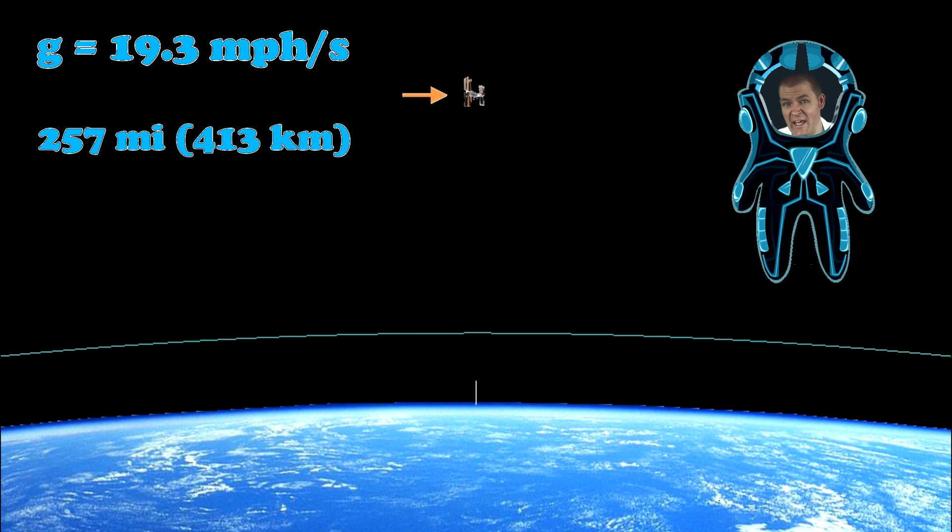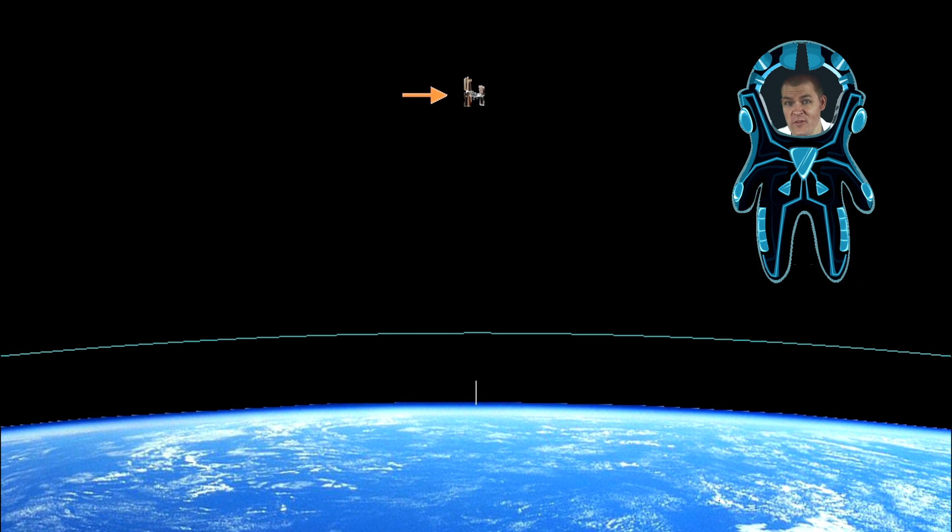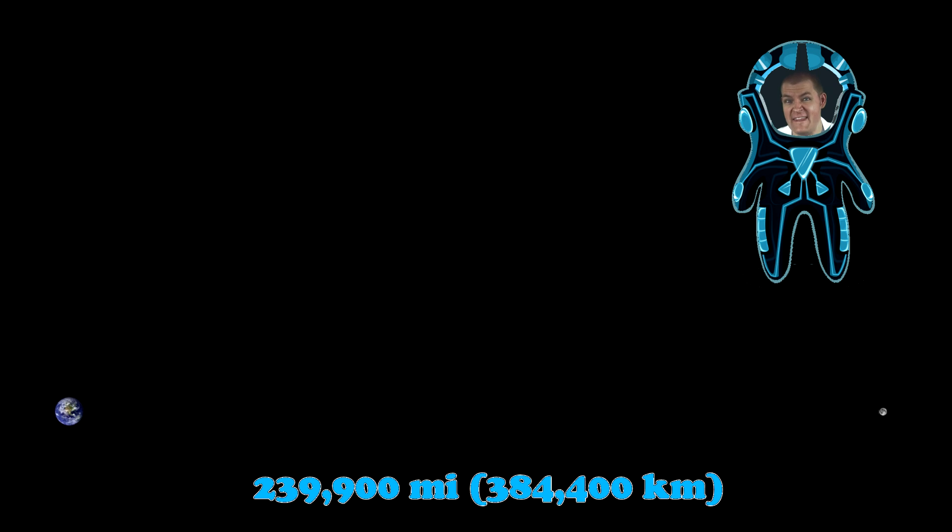You might be wondering where the Moon is in this picture. It doesn't even fit in view because it's this far away! That's about 240,000 miles! Out there, gravity is 0.006 miles per hour per second, which still isn't zero. Don't forget, the Earth still holds onto it all the way out there. This number might seem really small, but then it takes a whole month to go around the Earth, so it kind of makes sense.